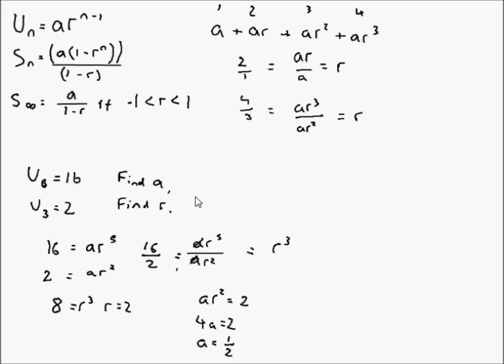Now let's say we were asked to find the sum of the first eight terms of this sequence. Then we have sum of the first eight terms is equal to a, which is a half, multiplied by 1 minus r, which is 2, to the power of 8, divided by 1 minus 2.